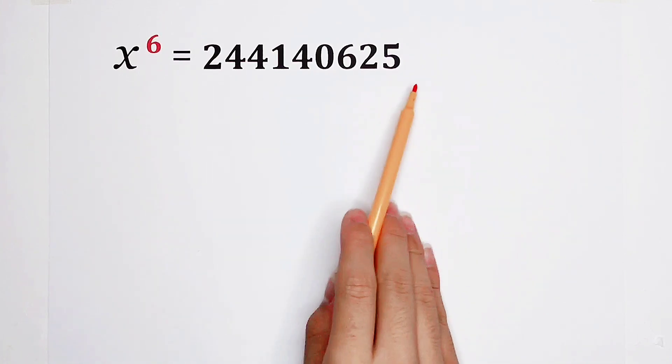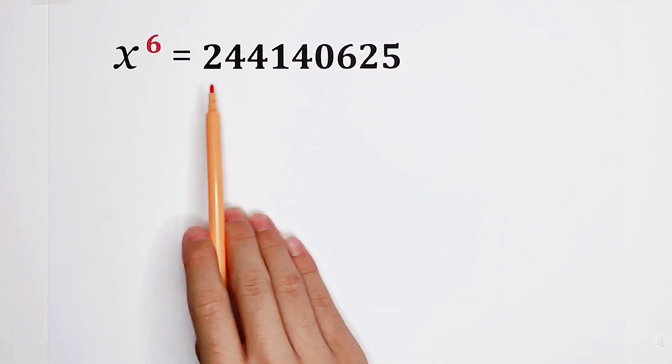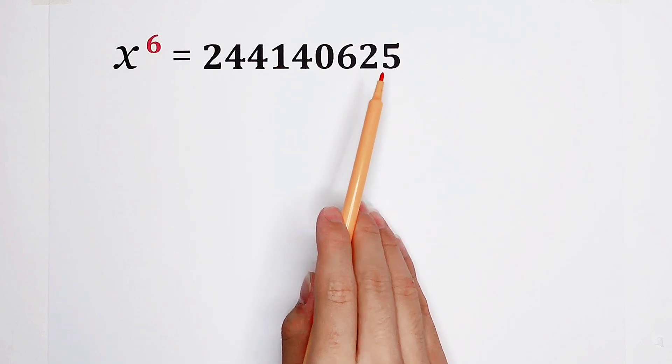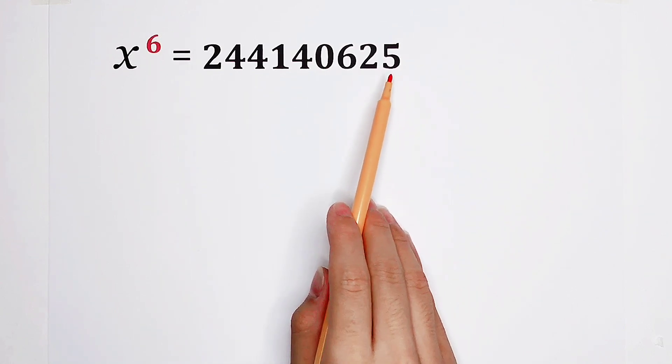This number has nine digits — one, two, three, four, five, six, seven, eight, nine. Nine digits.